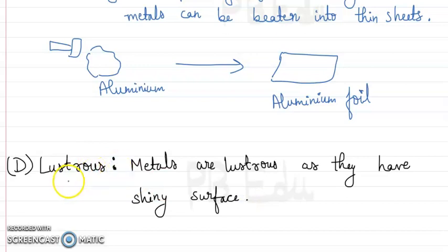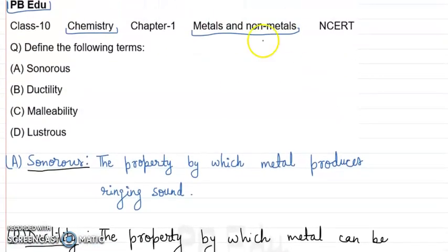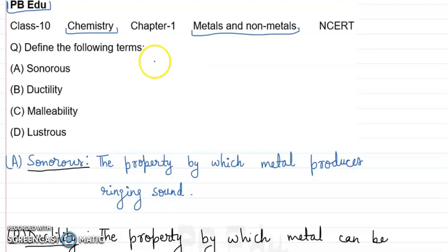We can observe this if we cut a metal like sodium — its newly cut surface is shiny, and this shine is because of the lustrous property of metals. So we have defined all four properties of metals: sonorous, ductility, malleability, and lustrous. If you like this solution, click the like button, ask your queries in the comment section below, and subscribe to our channel. Thank you.